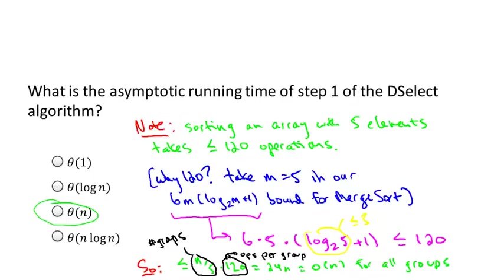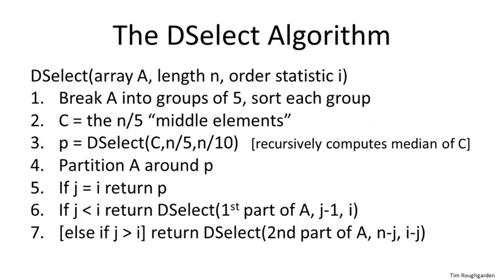Having warmed up with step one, let's look at the whole seven-line algorithm. We're going to develop a recurrence, which expresses the running time in two parts: the work done by recursive calls on smaller sub-problems, and the work done locally outside the recursive calls. Step one — sorting groups of five — is theta of n. Copying the first-round winners into array C is obviously linear time.